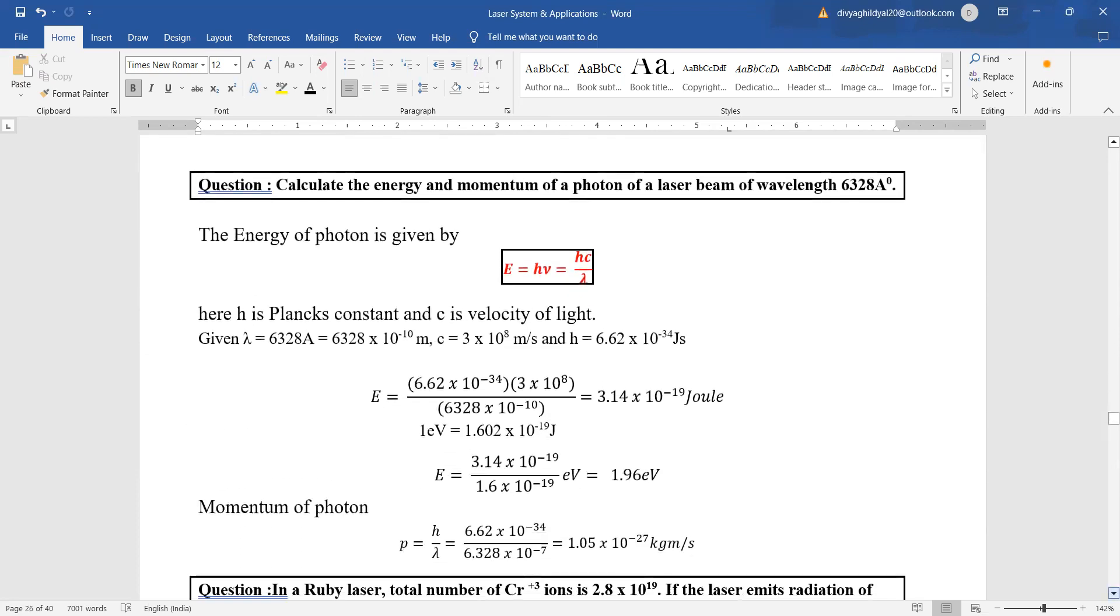Next, let us begin the numerical. Calculate the energy and momentum of a photon of laser beam of wavelength 6328 angstrom. Energy is given by e equal to h mu, which is equal to h c by lambda. We will put the value of lambda. It is given in angstrom. We will change it into meter, put the value of c and h. We will get the answer in joule and convert it into electron volt.